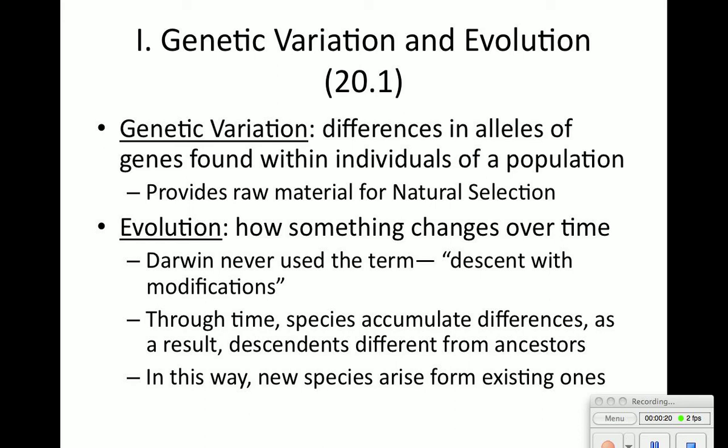Evolution is how something changes over time. Darwin never used the term 'descent with modifications.' Through time, species do accumulate differences, and as a result their descendants are very different from their ancestors. In a way, we can say new species arise from formerly existing ones.